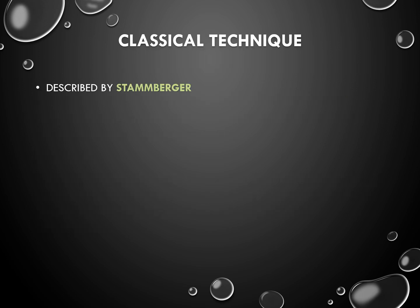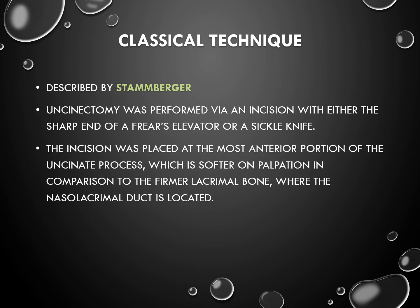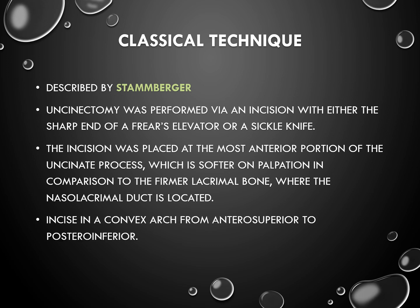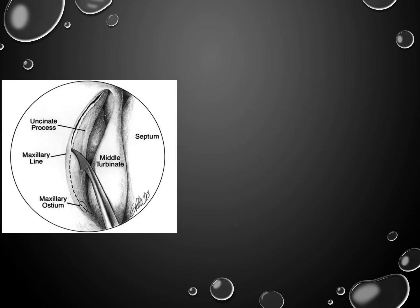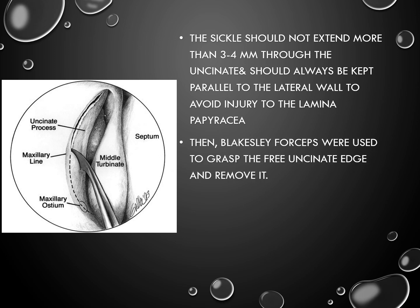The first method is the classical technique described by Stammberger. Uncinectomy was performed via an incision with either the sharp end of a Freer's elevator or a sickle knife. The incision was placed at the most anterior portion of the uncinate process, which is softer on palpation in comparison to the firmer lacrimal bone where the nasolacrimal duct is located. The sickle should not extend more than 3 to 4 mm through the uncinate and should always be kept parallel to the lateral wall to avoid injury to the lamina papyracea.